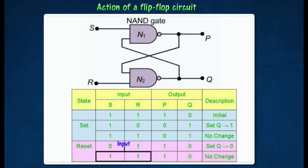If the logic of input S is changed from 0 to 1 again, the hold state will be repeated. The initial state is recalled by producing the same output states at P and Q, for example, 1 and 0 respectively.